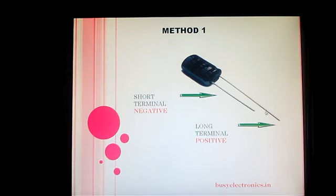One is a long terminal — the bigger one — which is the positive terminal, and the one which is shorter is the negative terminal. This is the simplest and most basic method of determining the electrolytic capacitor terminals.